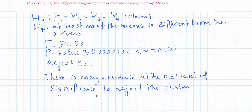So to recap: H0 should be a statement where all the means are equal, and HA should be a statement where at least one of the means is different from the others.